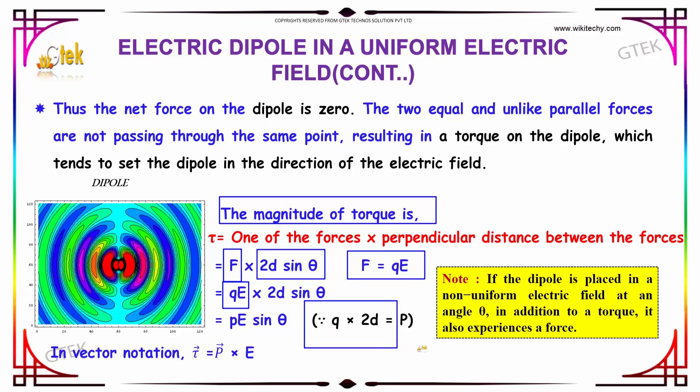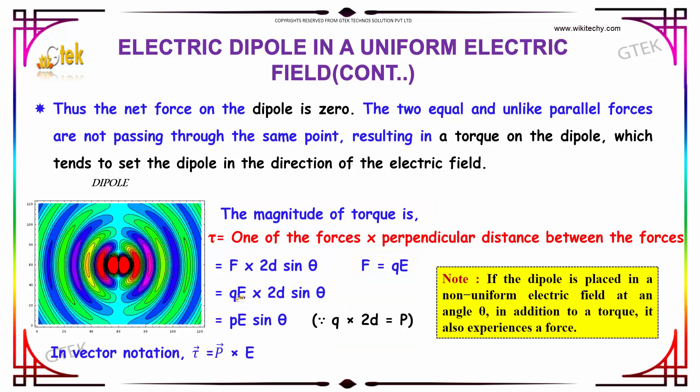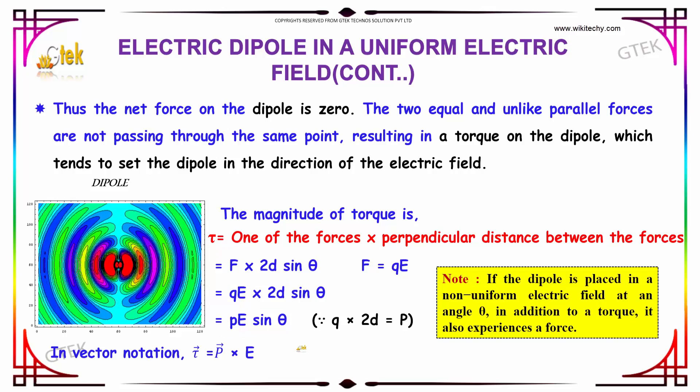Since we know the value Q into 2d equals P, instead of Q into 2d we can replace it by P. So now we will be having PE sin theta.